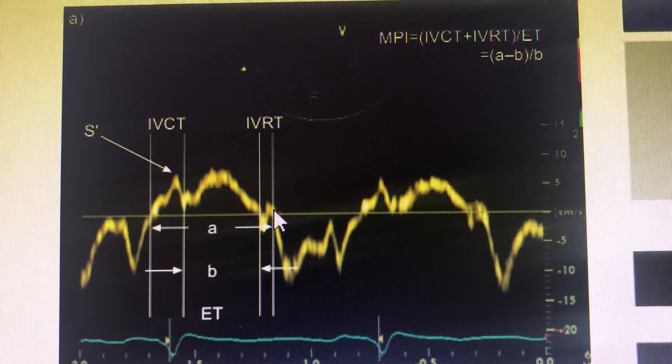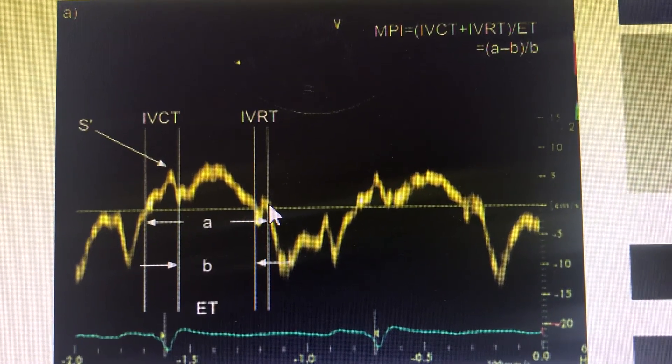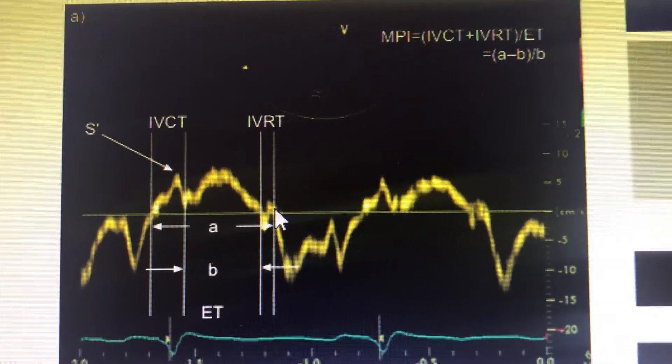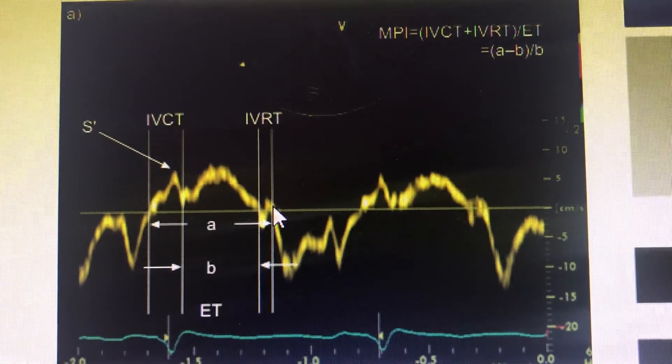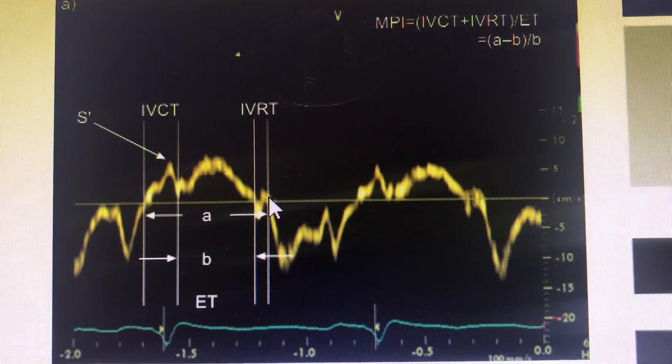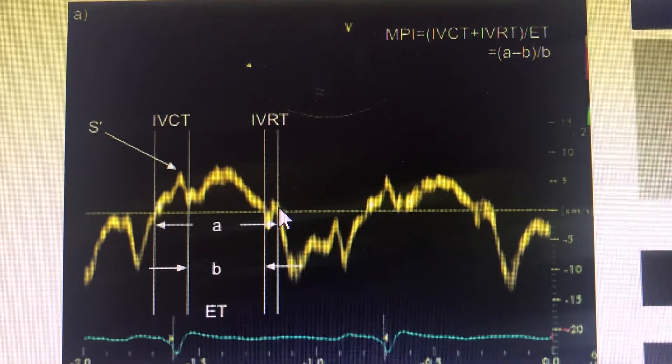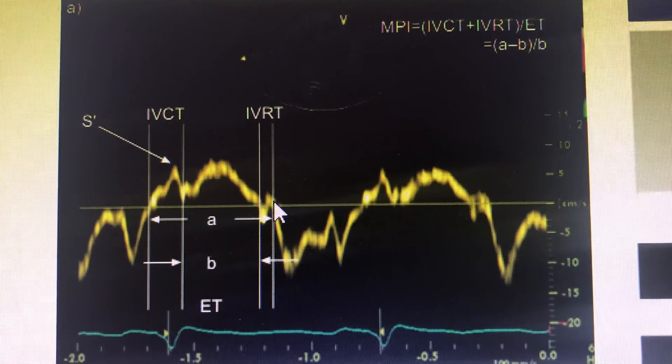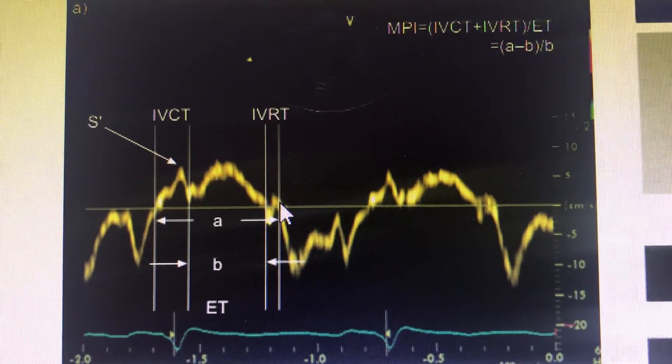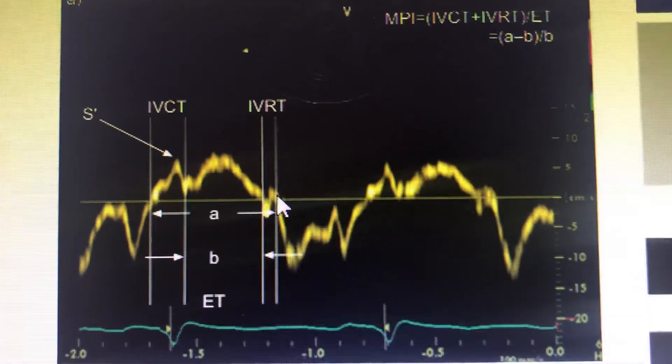However, like pulmonary acceleration time and other indices we discussed, it is heart rate dependent. Heart rates above 100 require rate correction. This is one of the flaws of these indices. An MPI less than 0.28 is considered normal, while more than 0.38 is considered abnormal for right ventricular function.